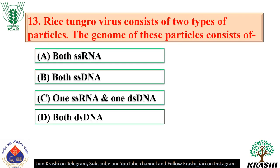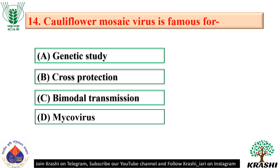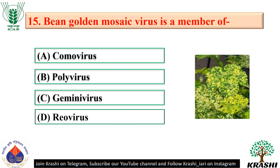Question number 13: Rice tungro virus consists of two types of particles. The genome of these particles consists of one single-stranded RNA and one double-stranded DNA — option C. Question number 14: Cauliflower mosaic virus is famous for its use in genetic study. Question number 15: Bean golden mosaic virus is a member of Gemini virus — option C.